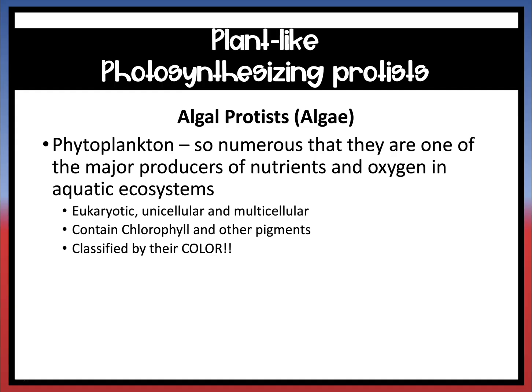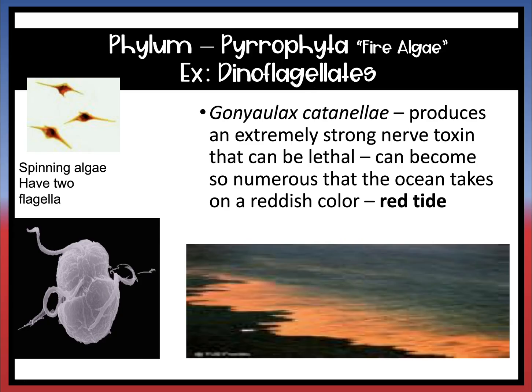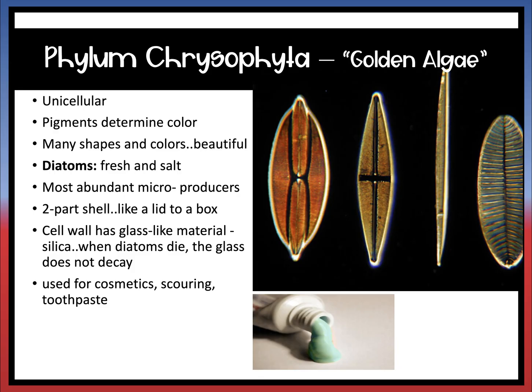The first phylum is phylum Pyrophyta, which is your fire algae. Looking at the image on your screen, fire algae look like a red tide, that reddish color. They produce a toxin that can be extremely lethal, so if you see that, don't go in the water. The next phylum is Chrysophyta, your golden algae. They are unicellular — an example is diatoms. 'Di' means two, so they have a two-part shell. These are often found in cosmetics and toothpaste, anything with a gritty feeling.